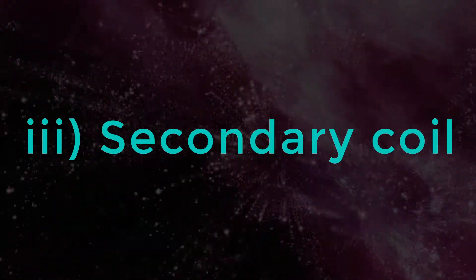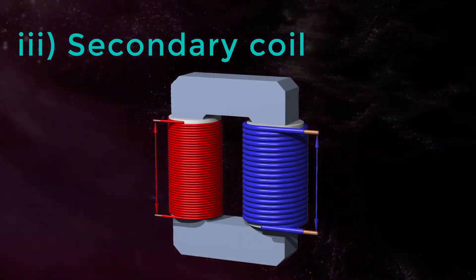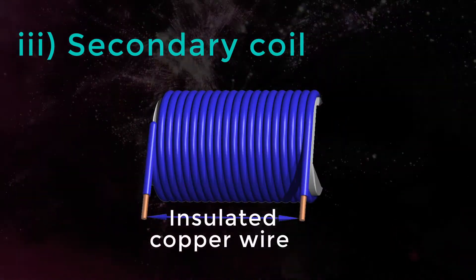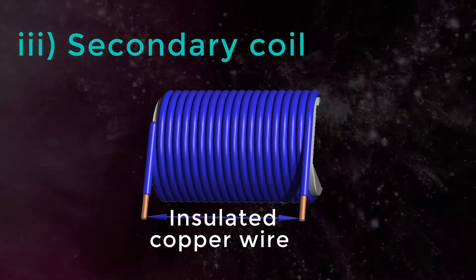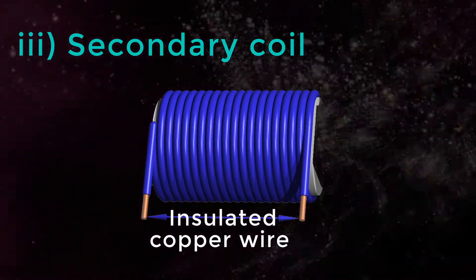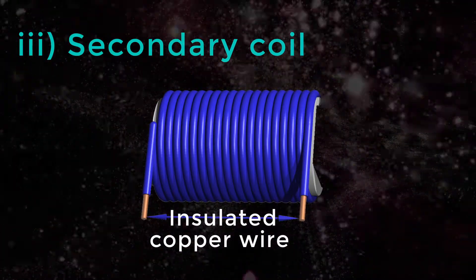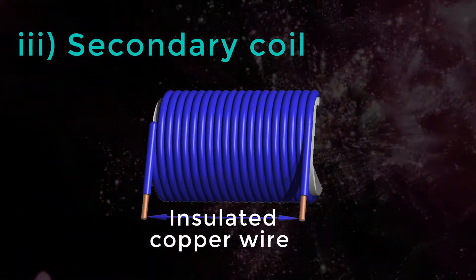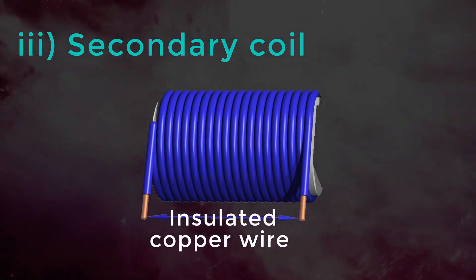Secondary coil: on the other side of the rectangular core, that is opposite to the primary coil, another insulated copper wire is wound. Since the output is delivered from this coil, it is called a secondary coil.